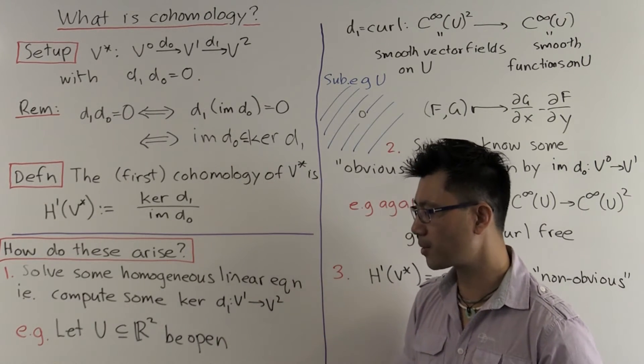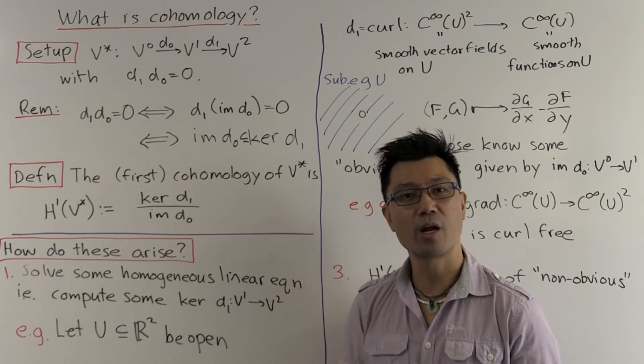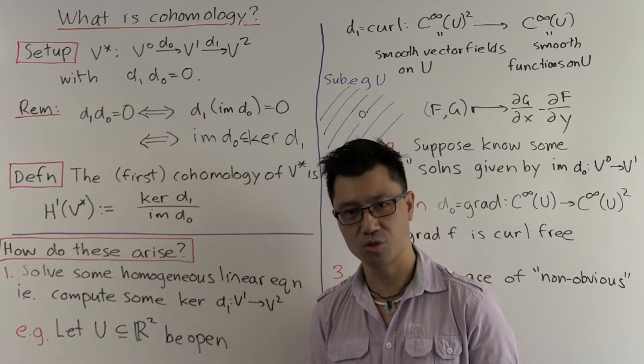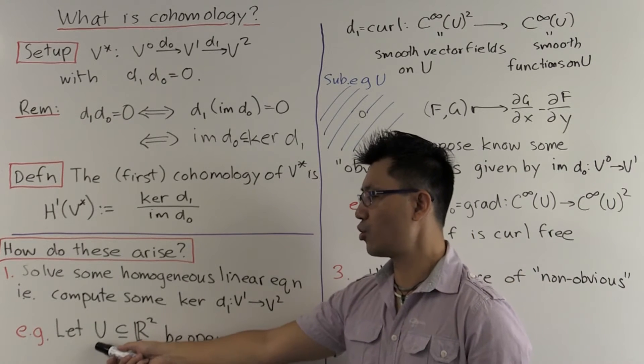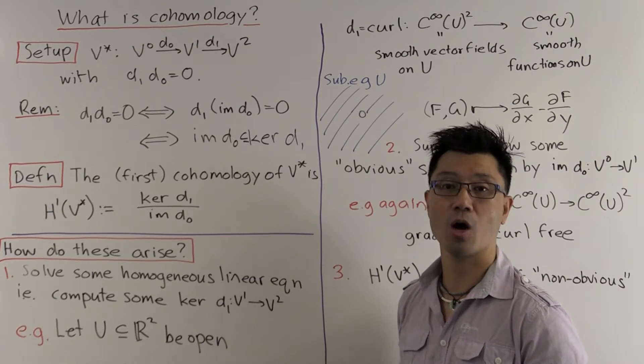So solving the homogeneous linear equation just means you want to compute the kernel of D1. OK, let's be a little bit more concrete. And the example that I want to give you comes from differential geometry.